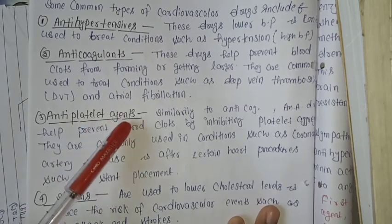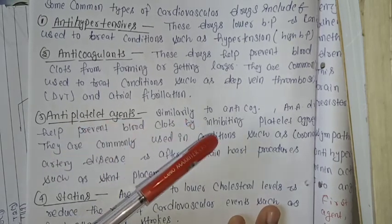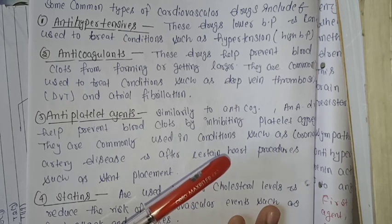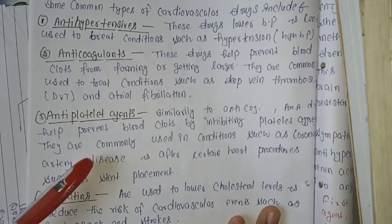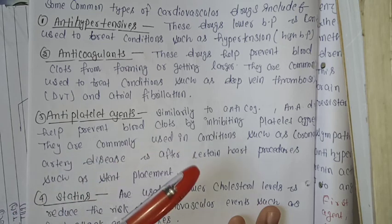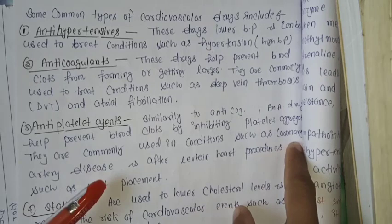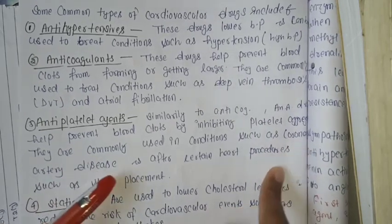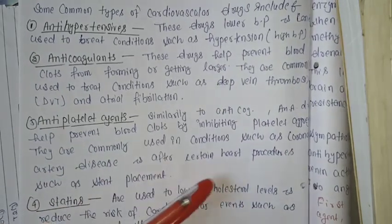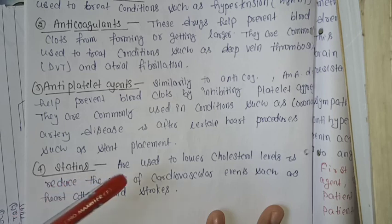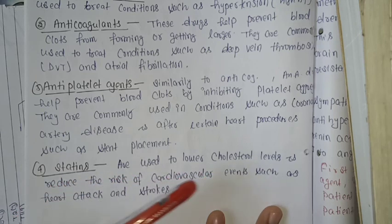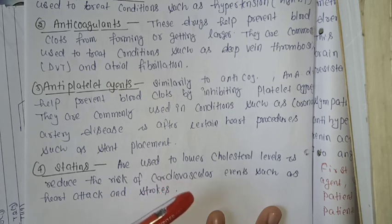3. Anti-platelet agents — similar to anticoagulants, anti-platelet agents help to prevent blood clots by inhibiting platelet aggregation. They are commonly used in conditions such as coronary artery disease and after certain heart procedures such as stent placement. 4. Statins — these are used to lower cholesterol levels and reduce the risk of cardiovascular events such as heart attack and stroke.